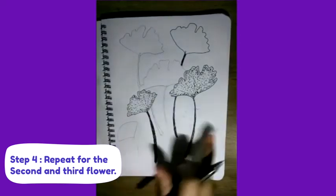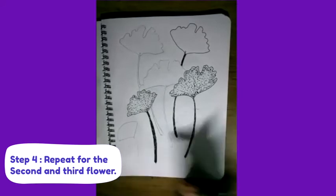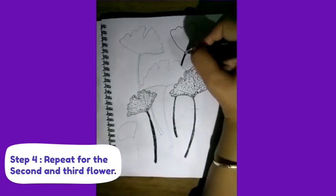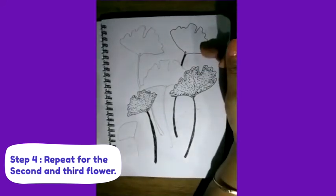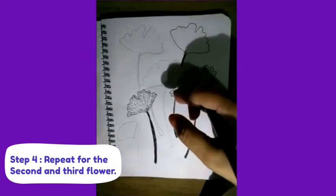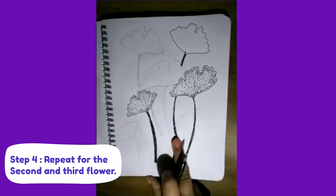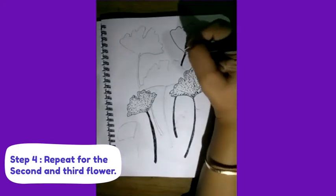So I have finished two petals completely, two flowers. Now this top flower on your right, the one which is having a broken branch, in that we will do the same stippling.